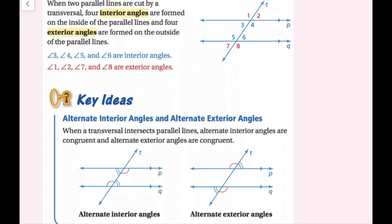When two parallel lines are cut by a transversal, four interior angles are formed on the inside of the parallel lines, and four exterior angles are formed on the outside. The interior angles are three, four, five, and six, because they're inside the two parallel lines. The exterior angles are one, two, seven, and eight, because they are outside the parallel lines.